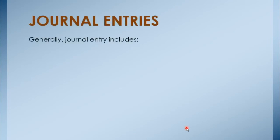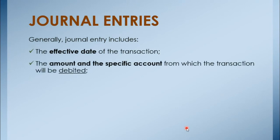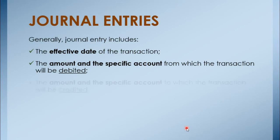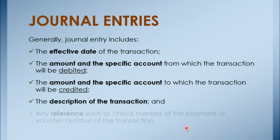Generally, a journal entry includes the effective date of the transaction, the amount, and the specific account to be debited, the description of the transaction, and any reference such as the check number of the payment or voucher number of the transaction. Let us take a look at the following transactions.